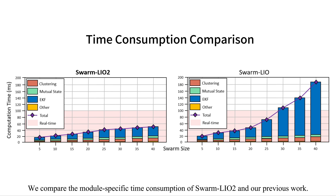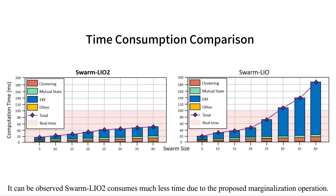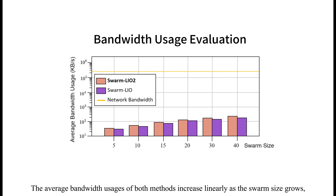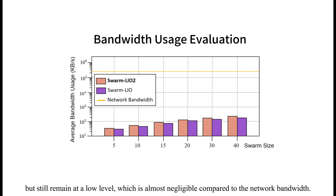We compare the module-specific time consumption of Swarm LiO2 against our previous work. Swarm LiO2 consumes much less time due to the proposed marginalization operation. We also count the transmitting bandwidth usage of both methods. The average bandwidth usage of both methods increases linearly as the swarm size grows, but still remains at a low level, which is almost negligible compared to the network bandwidth.